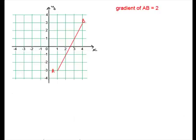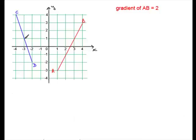Let's have a look at another line. In this next line CD, you'll notice that it's going downwards. For every one unit across in the x direction, the y value drops by three units. We go one unit across in the x direction and the y value drops again by three units. So for every one unit across, y decreases by three units. We talk about the gradient of CD as being negative three — we're losing three units in the y value for every one unit gained in x.